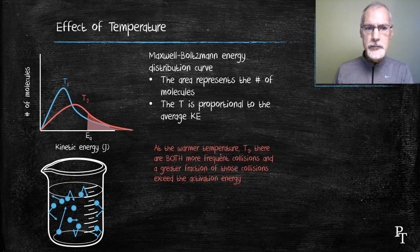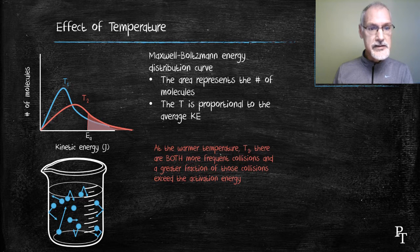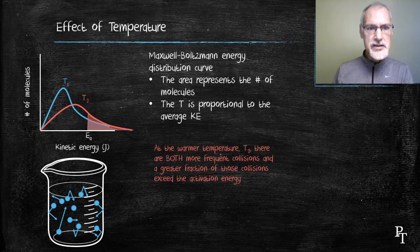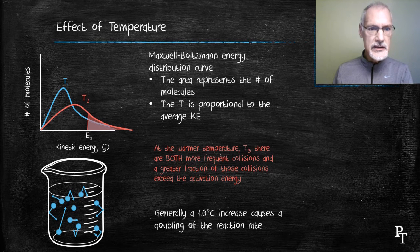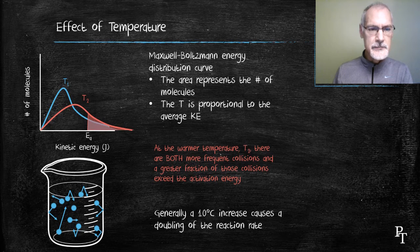Increasing temperature has a two-fold effect on the rate of my reaction. It increases the frequency of collisions, but more importantly, it increases the proportion or fraction of collisions that are effective or successful. Generally speaking, a 10-degree increase in temperature results in a doubling of my rate.